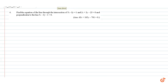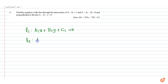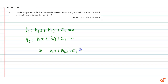We know that the line through the point of intersection of the lines L1, A1x plus B1y plus C1 equal to 0, and L2, A2x plus B2y plus C2 equal to 0, is A1x plus B1y plus C1 plus K into A2x plus B2y plus C2 equal to 0, where K is a constant.